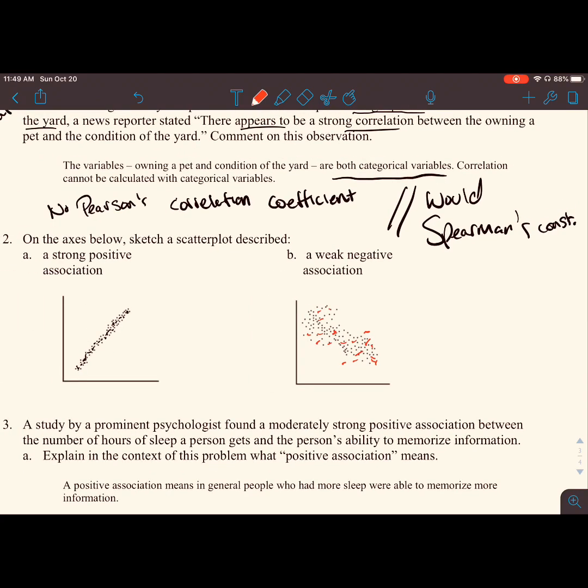A study by a prominent psychologist found a moderately strong positive association between the number of hours of sleep a person gets and the person's ability to memorize information. Explain in context of this problem what a positive association means.